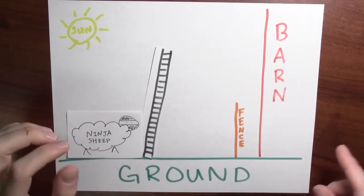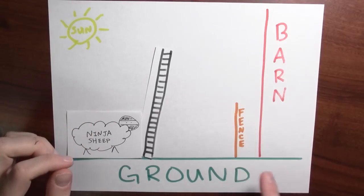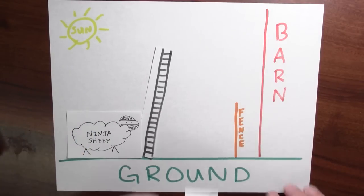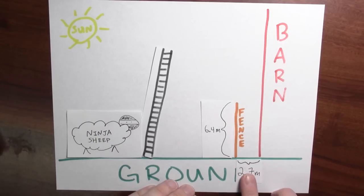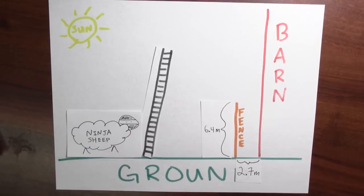Well, let me say a little bit more about exactly how tall the fence is and how far it is from the barn. Let's say that that fence is 6.4 meters tall. And let's say that the fence is 2.7 meters from the barn.